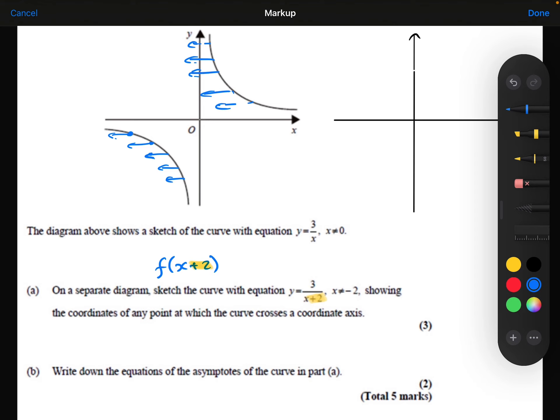Crucially, the 3 over x graph has asymptotes at x equals 0 and y equals 0. So this x equals 0 asymptote here is also going to shift 2 squares in the negative direction to be x equals minus 2.